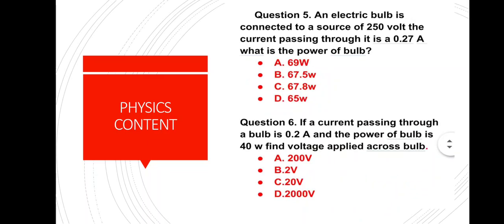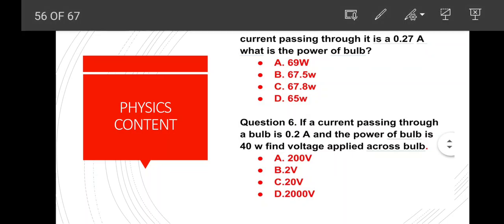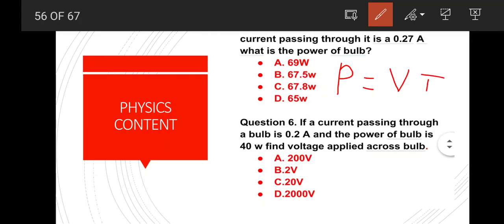Question number 5: An electric bulb is connected to a source of 250 volt. The current passing through it is 0.27 ampere. What is the power of the bulb? To solve this, we need the formula for power: P is equal to V into I. We have to put the values into this formula.